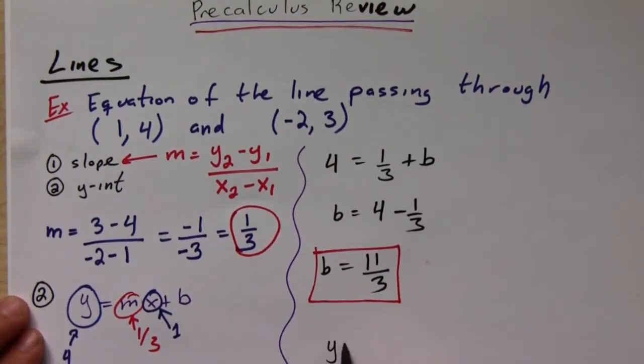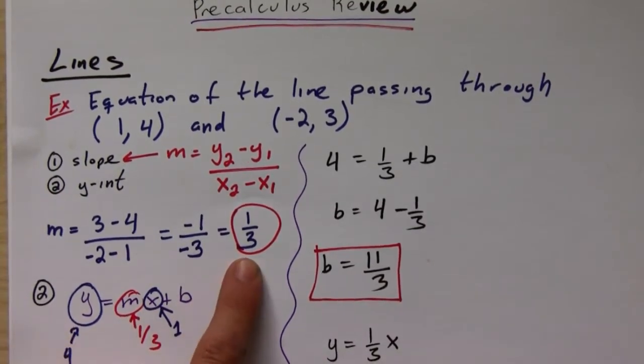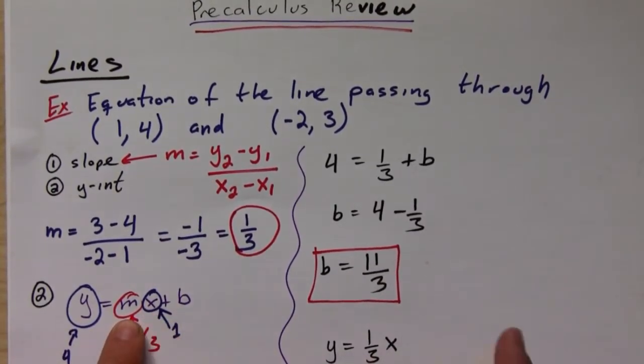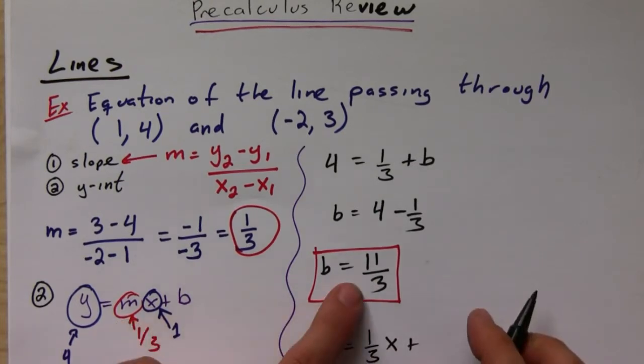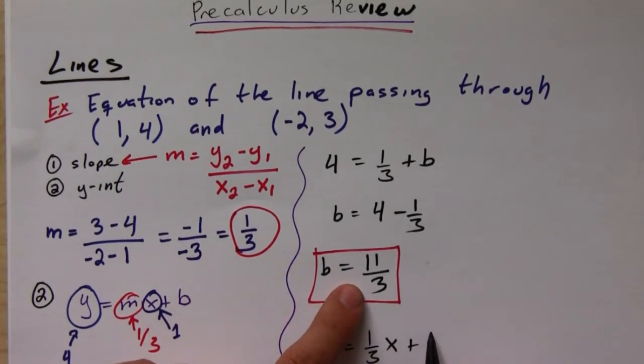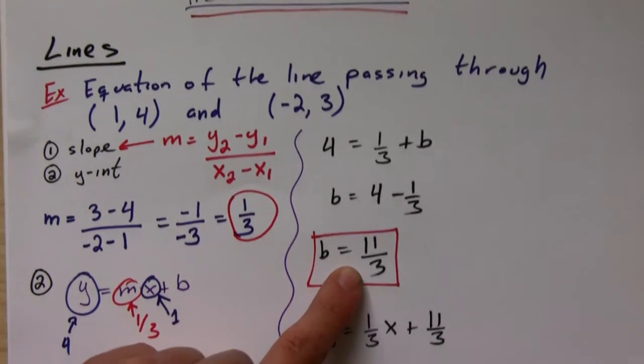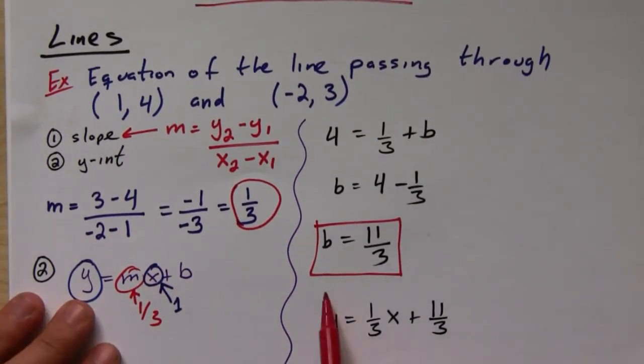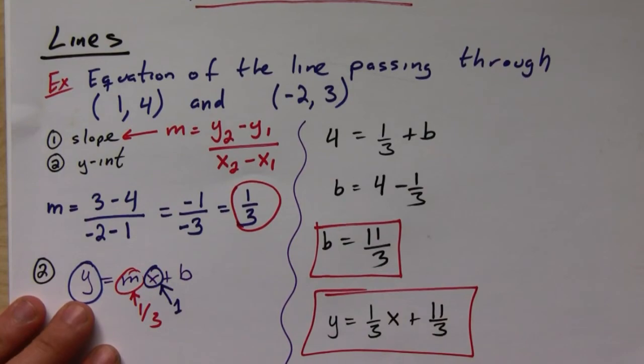Okay, so that means that the equation of my line is going to be y = (1/3)x, because 1/3 is my slope—remember it's mx plus my y-intercept, which is 11/3. And so this ends up being my answer.